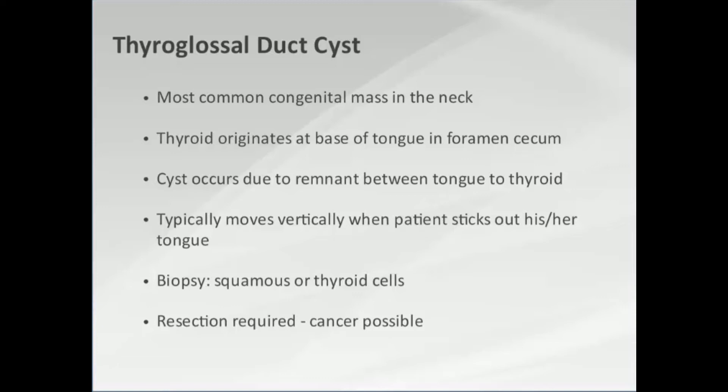Theoretically, when you move your tongue, the thyroglossal duct cyst will also move — so if you have the patient stick their tongue in and out, you should see the cyst go up and down. If you biopsy a thyroglossal duct cyst, you may get squamous cells if it's located near the base of the tongue, or thyroid cells if it's more inferior and closer to the gland. These do get surgically resected because those thyroid cells can cause or turn into cancer.